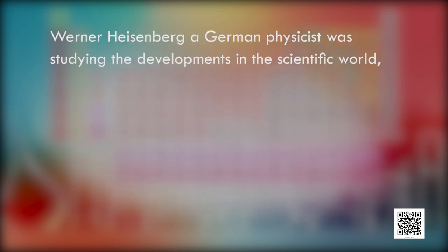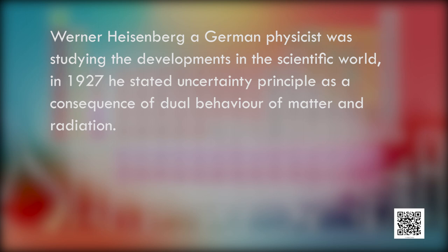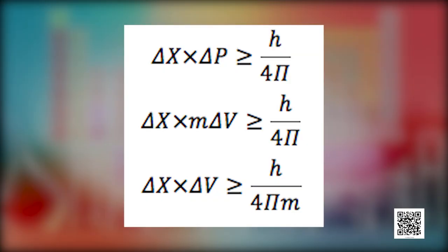Werner Heisenberg, a German physicist, was studying the developments in the scientific world in 1927. He stated the uncertainty principle as a consequence of the dual behavior of matter and radiation. It states that it is impossible to determine simultaneously — that is, at the same time — the exact position and exact momentum or velocity of a subatomic particle like an electron. Mathematically, it is given as: delta x multiplied by delta p is greater than or equal to h upon 4 pi.